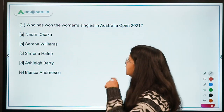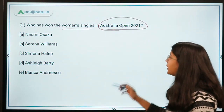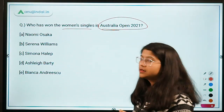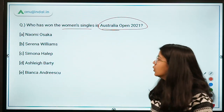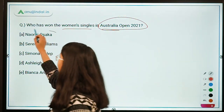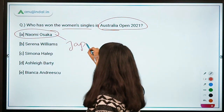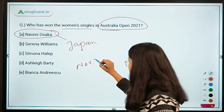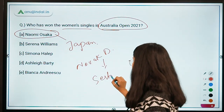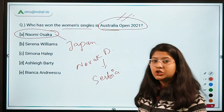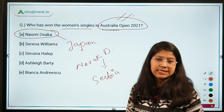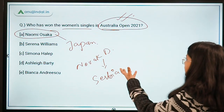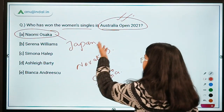Who has won the women's singles at Australian Open 2021? The Australian Open is one of the four Grand Slam tournaments. The women's singles winner is Naomi Osaka from Japan. The men's singles winner is Novak Djokovic from Serbia. This is a major tournament that took place right before the examination, so these questions can be asked.